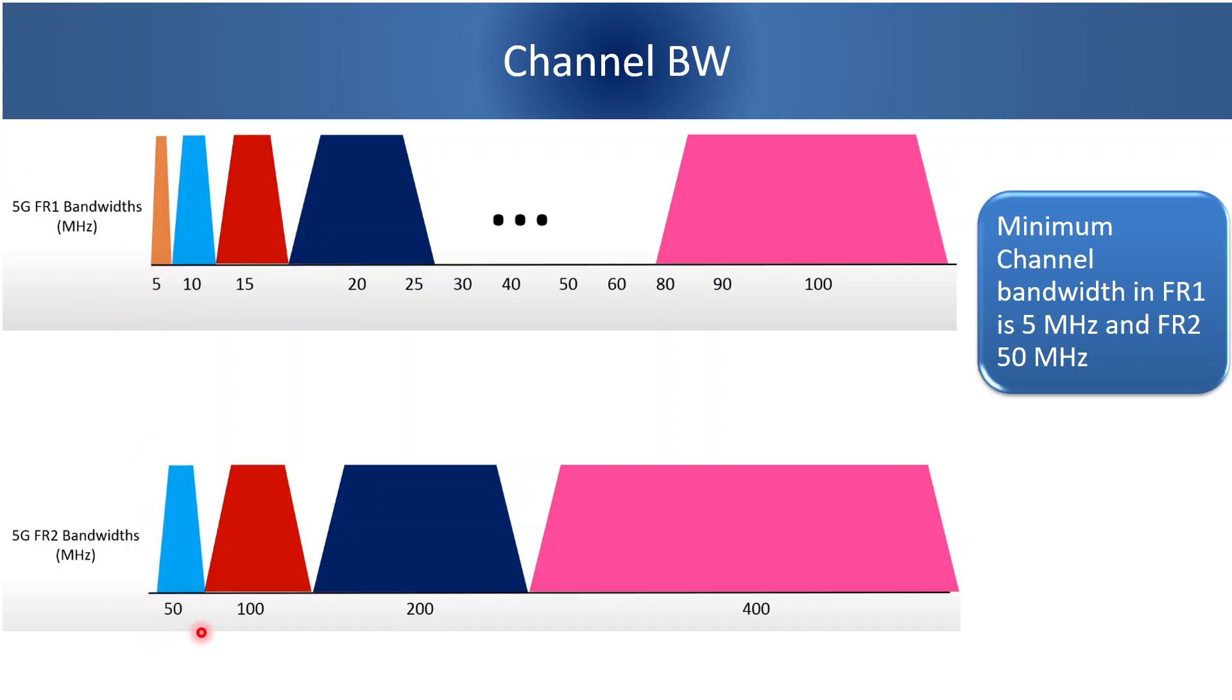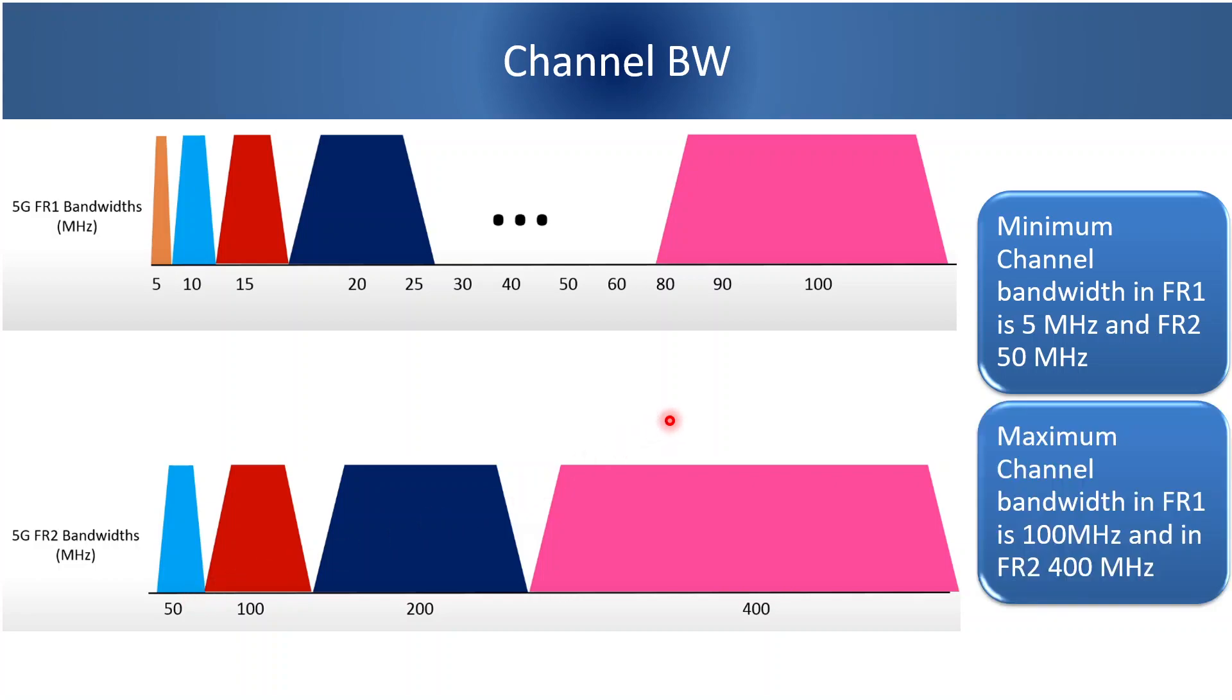and in frequency range 2, 50 MHz. Maximum channel bandwidth supported in FR1 is up to 100 MHz and in FR2 it is up to 400 MHz.